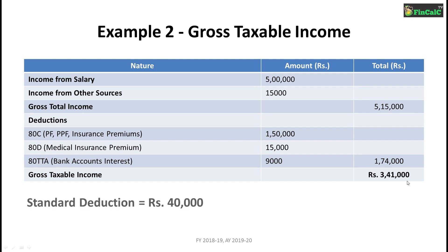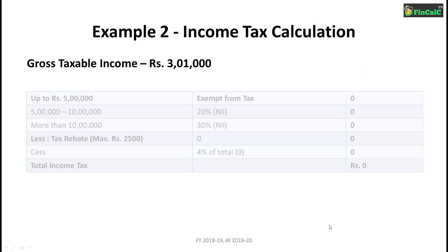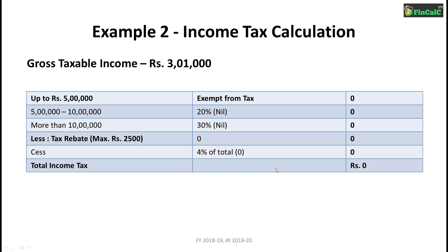After applying the standard deduction of Rs 40,000, gross taxable income becomes Rs 3,01,000. Since income is up to Rs 5 lakhs, the 0% tax slab applies, and income tax at 20% and 30% slab rates is also Rs 0. So in this example, no tax is payable based on the tax slab rates for people of age above 80 years.